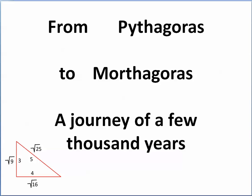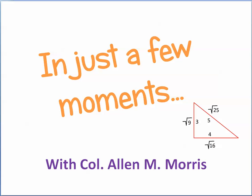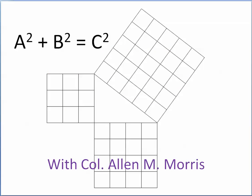From Pythagoras to Morthagoras — a journey of a few thousand years in just a few moments with me, Colonel Allen M. Morris. We'll take a look at this a squared plus b squared equals c squared thing that Pythagoras came up with a couple thousand years ago, and we'll work a couple of practice examples after we take a look at a few things.